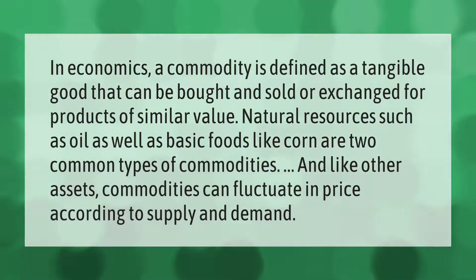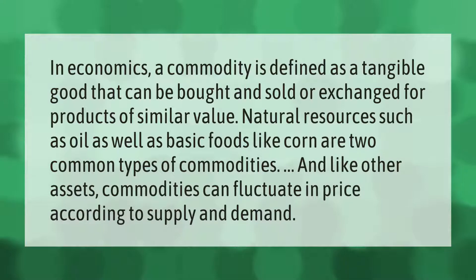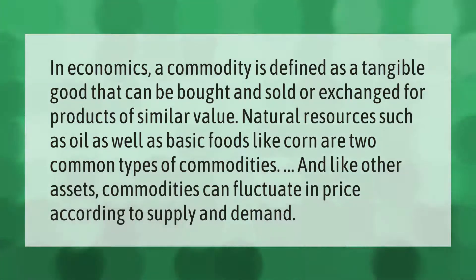In economics, a commodity is defined as a tangible good that can be bought and sold or exchanged for products of similar value. Natural resources such as oil, as well as basic foods like corn, are two common types of commodities. And like other assets, commodities can fluctuate in price according to supply and demand.